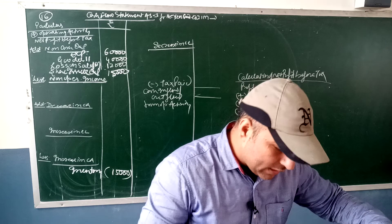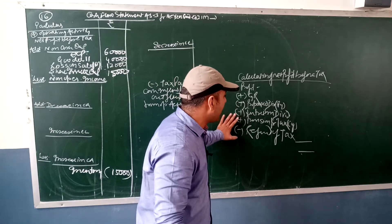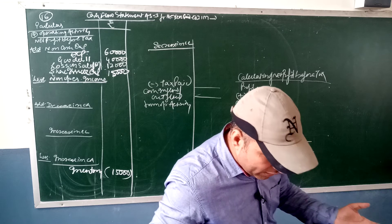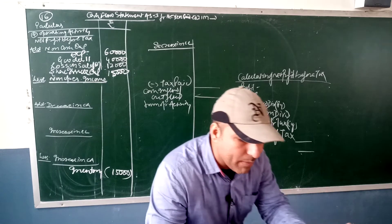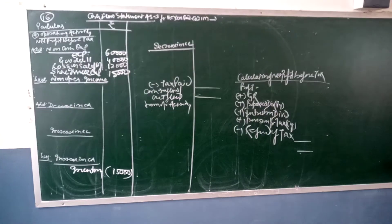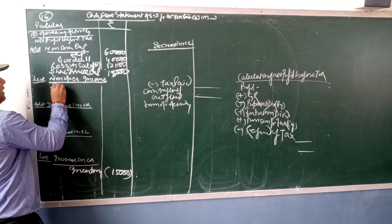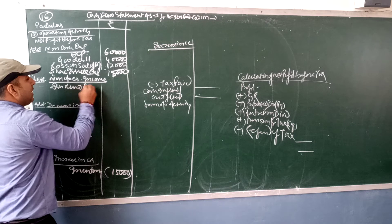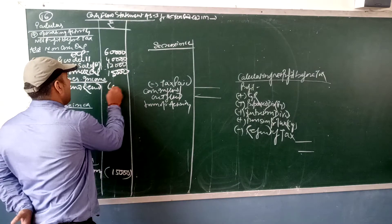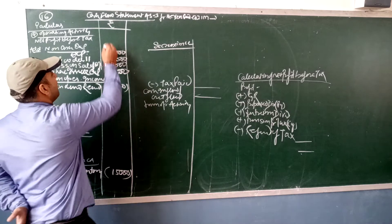For tax-related items, no information is given. Under other income, we have dividend received — dividend received is non-operating income. One figure is given: dividend received totals 60,000. This will be shown as a minus (deducted). The result gives a net loss of 50,000.